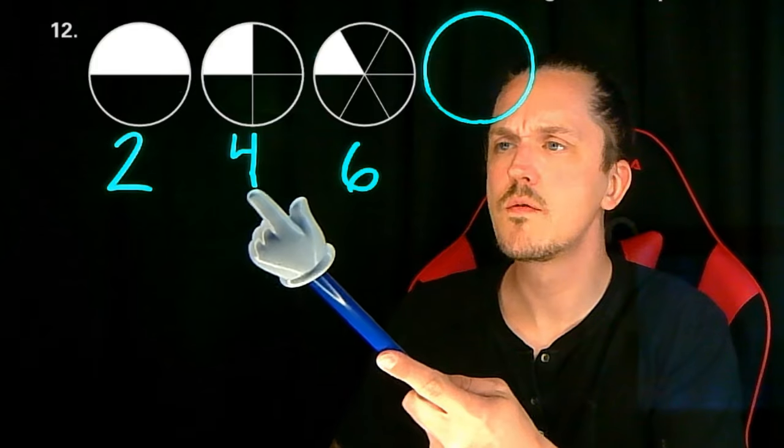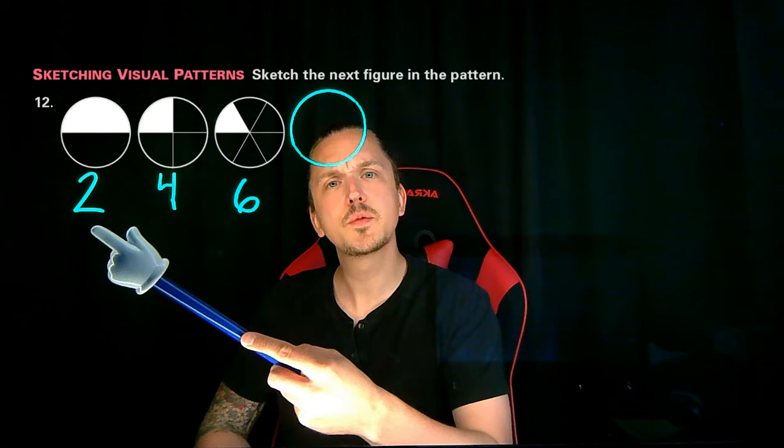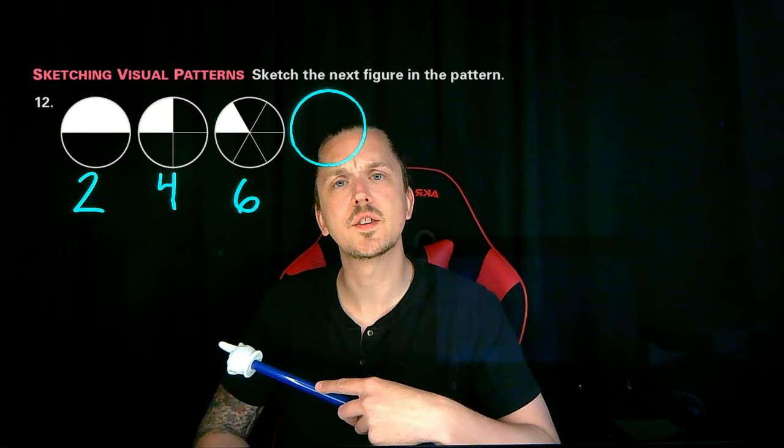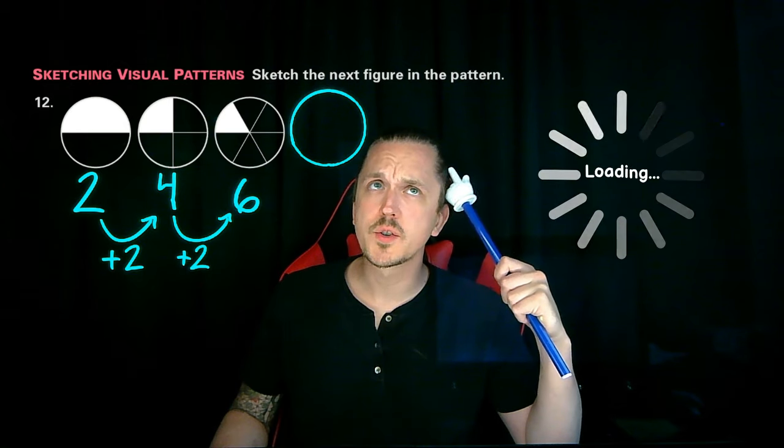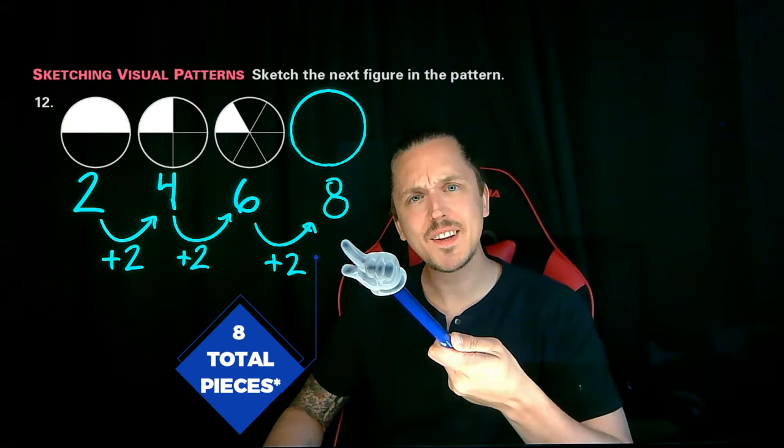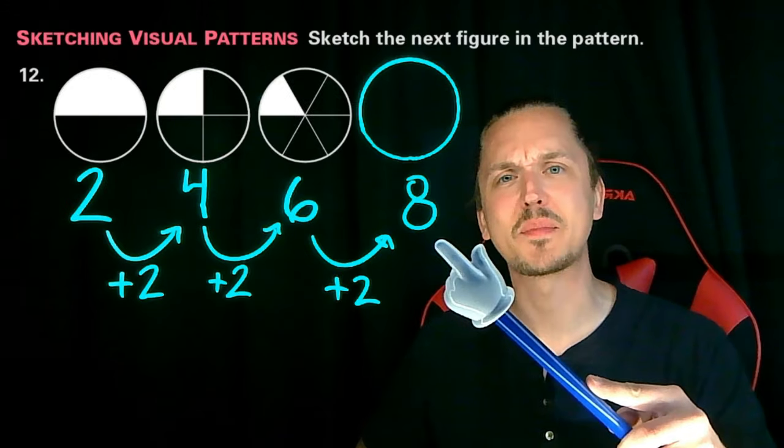Now hold on a minute. Two pieces, four pieces, six pieces. Seems to me like the number of pieces in each circle is increasing by two each time. And that means that the fourth circle is going to have six plus two, or eight total sides. Let's make that happen. Bam!